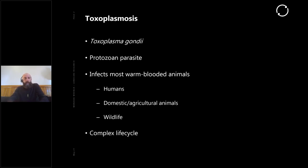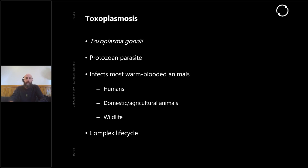Toxoplasmosis is a protozoan parasite by the name of Toxoplasma gondii. It infects most warm-blooded animals — humans, domestic animals, agricultural animals, and wildlife — and it has a very complex life cycle. That's really what we're going to be talking about today in a real applied aspect. The complex life cycle of wildlife diseases and parasites is something I'm particularly interested in. The wildlife ecology and management team here at Manaaki Whenua is looking to expand our wildlife disease capacity and research, and toxoplasmosis is a good candidate.